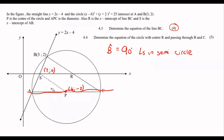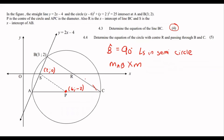Because this is the diameter — they did tell us that — the gradient of AB multiplied by the gradient of BC must equal negative one. That's what two perpendicular lines do. So if the gradient of AB is 2, then 2 multiplied by the gradient of BC equals negative one, giving us a gradient of BC equal to negative a half.